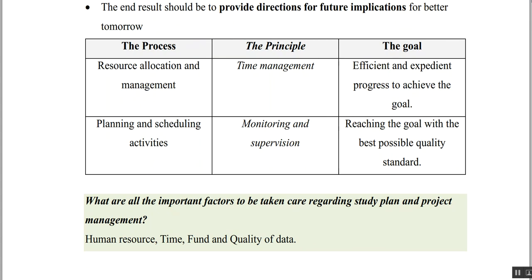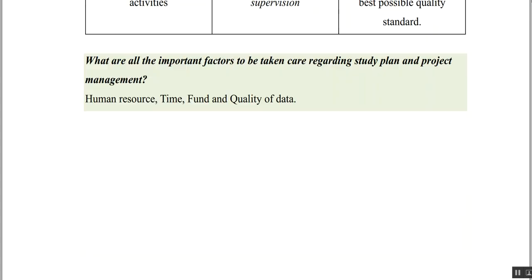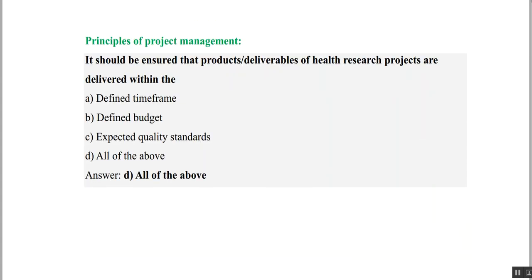The important factors to be taken care of regarding study plan and project management are human resources, time, funds, and the quality of data. There is an assignment question: it should be ensured that products or deliverables of health research projects are delivered within a defined time frame, defined budget, and expected quality standards — or all of the above. We need all three, so the answer is D.